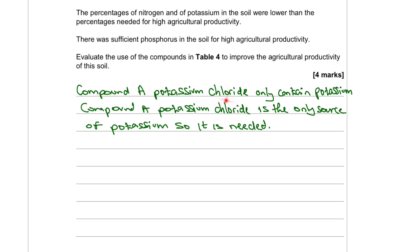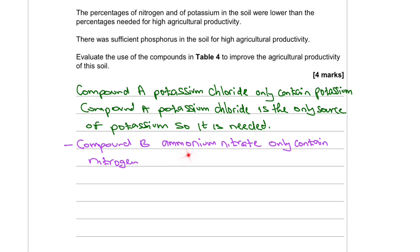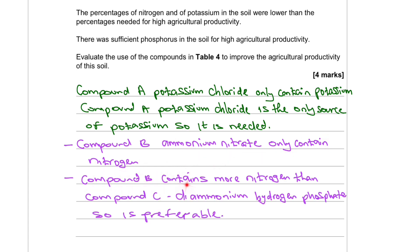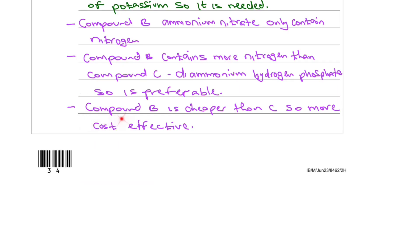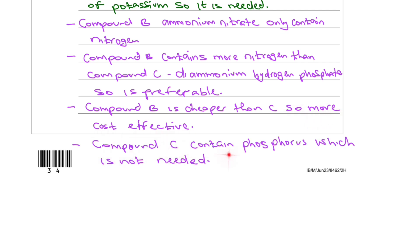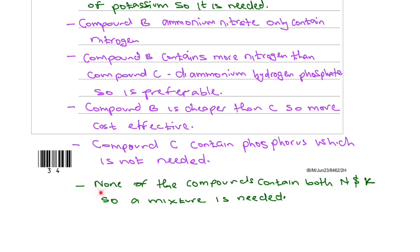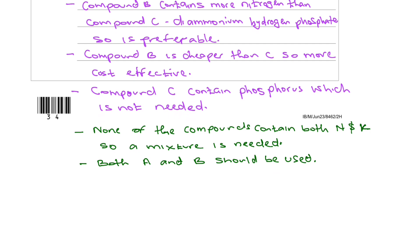Compound A, potassium chloride, is the only source of potassium, so it is needed. Compound B, ammonium nitrate, contains more nitrogen than compound C, diammonium hydrogen phosphate, so it is preferred. Compound B is also cheaper than C, making it more cost-effective. Compound C contains phosphorus, which is not required. None of the compounds contain both nitrogen and potassium, so a mixture is needed — both A and B should be used. Both A and C could also be used.